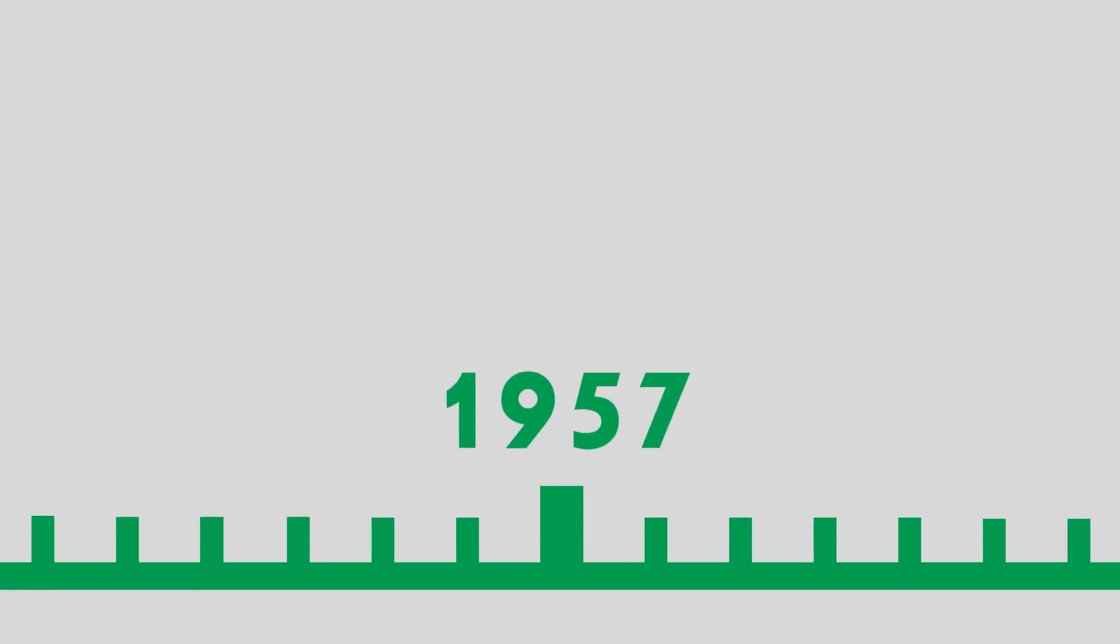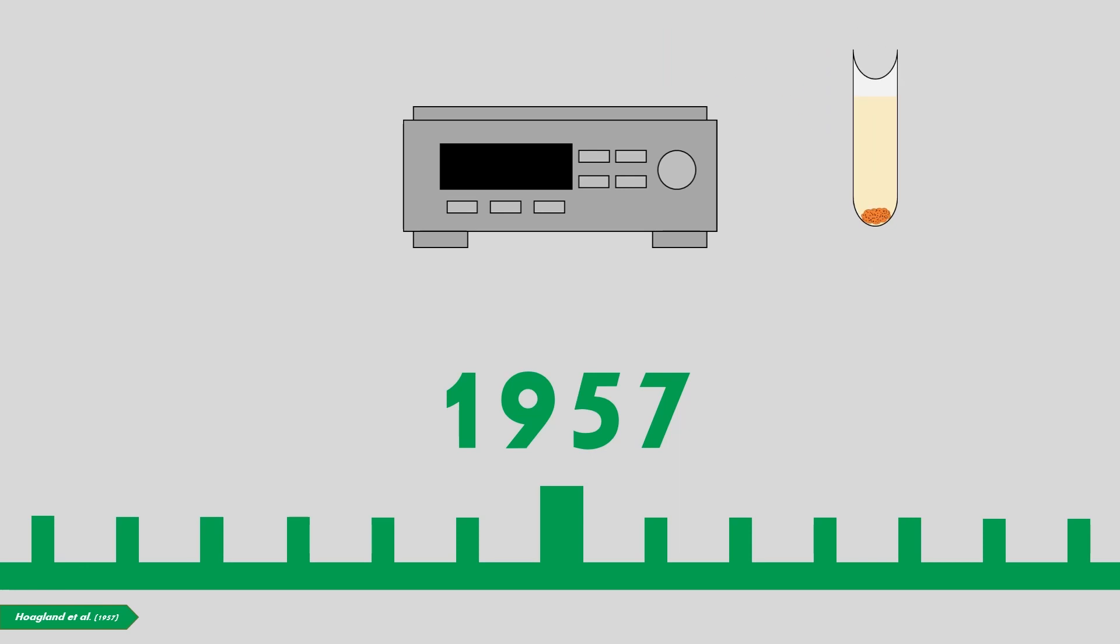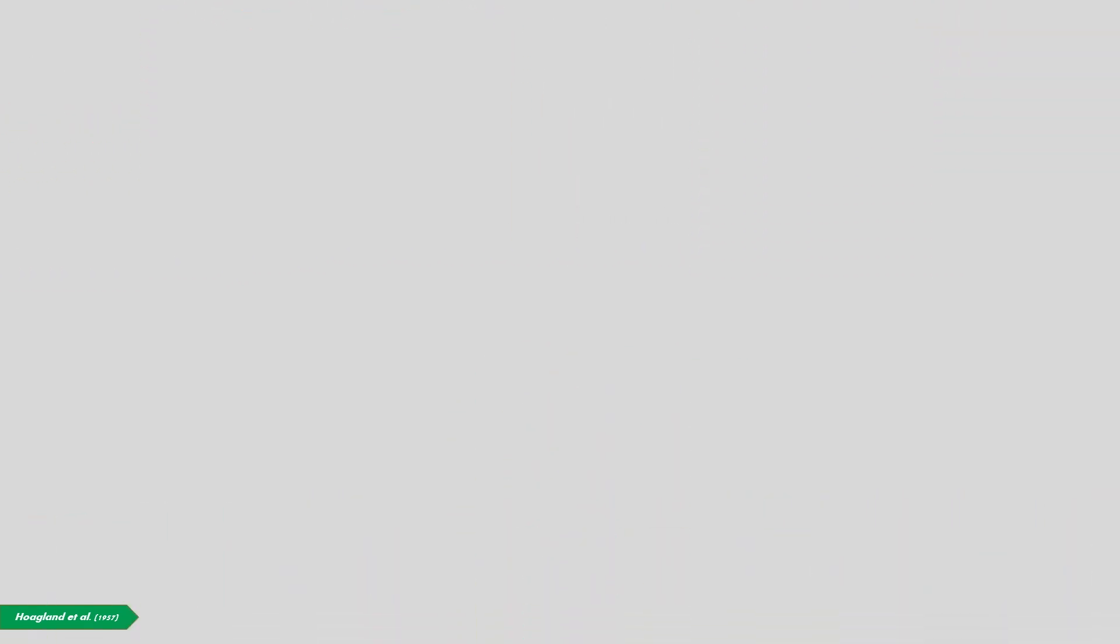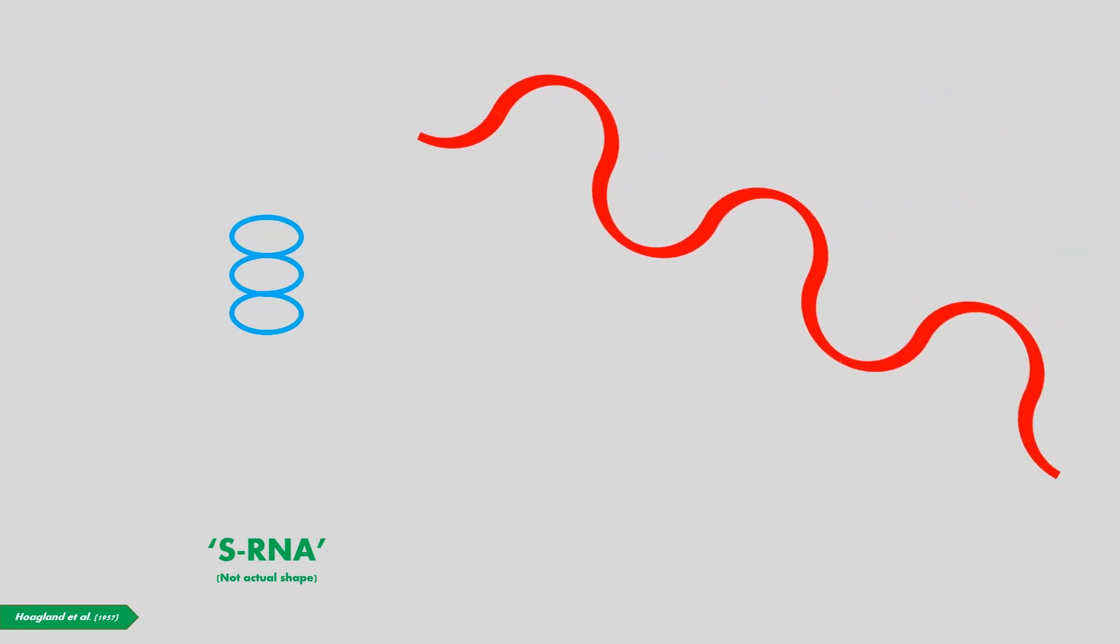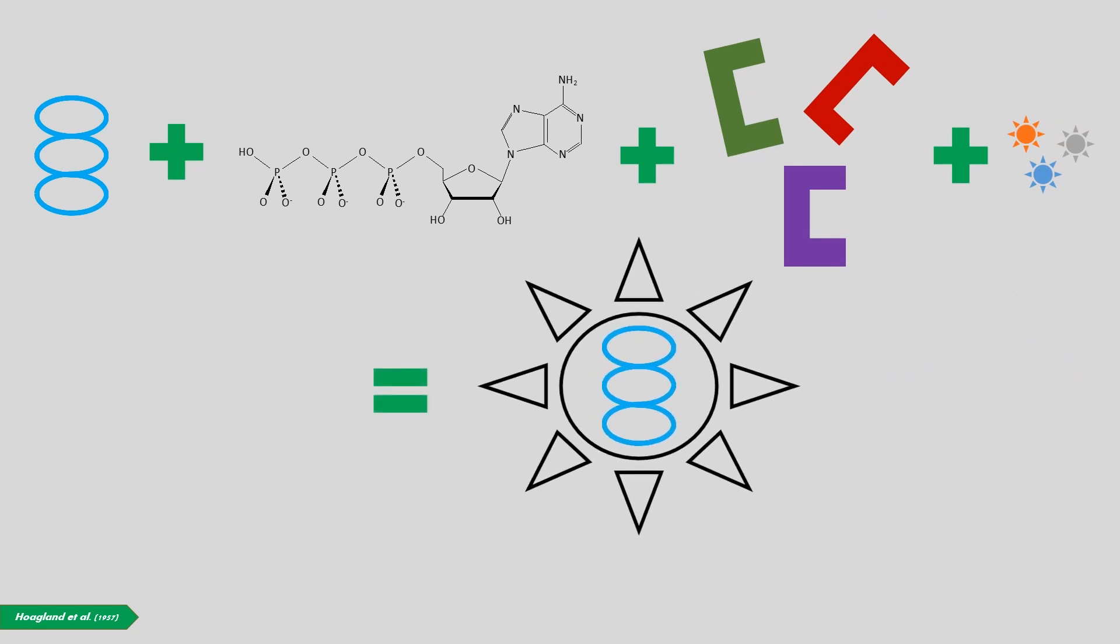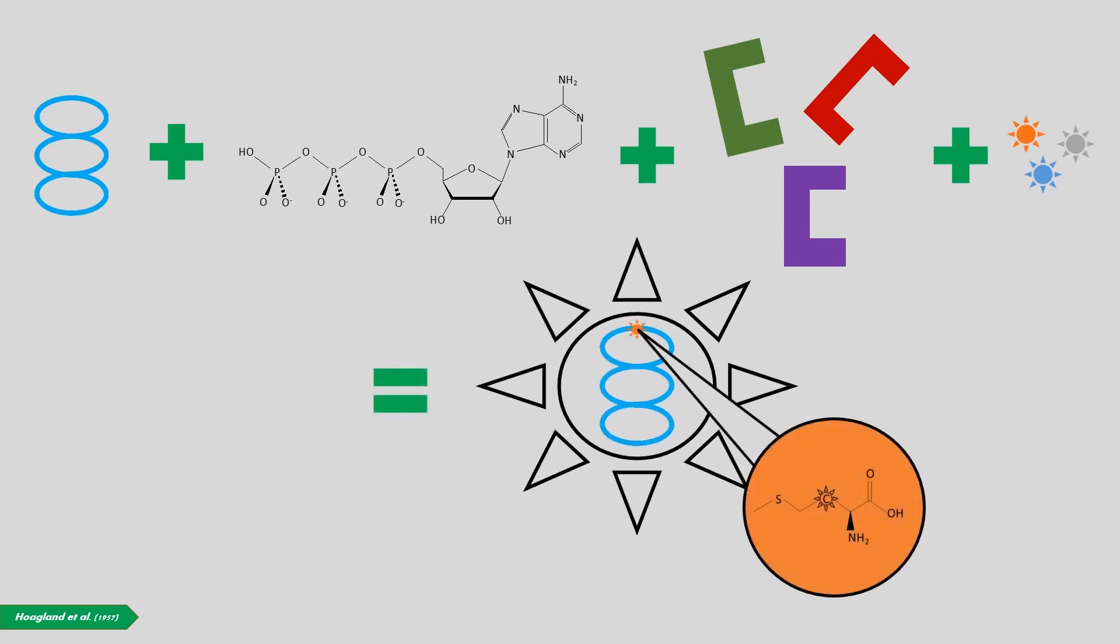But in 1957, a breakthrough was made. Through a modified version of the method we talked about earlier, whereby nucleic acid was examined for radioactivity instead of protein, scientists discovered a new type of RNA, which they called sRNA. They noted that sRNA had a much lower molecular weight than regular RNA, which we now refer to as messenger RNA. And when combined with ATP, amino acid activating enzymes, and carbon-14 amino acids, it would become radioactive. That is, somehow it's been labeled with a carbon-14 amino acid.